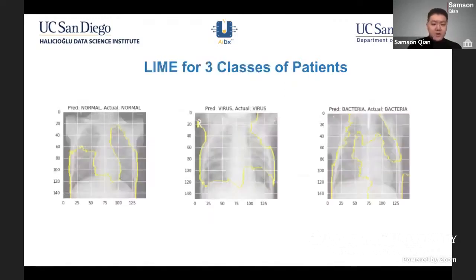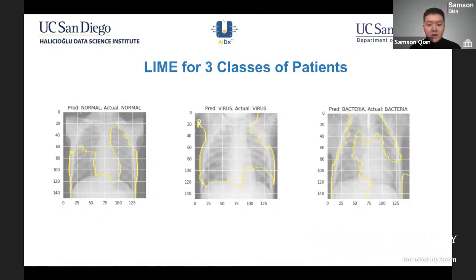Here are more examples of LIME for the three different classes. What LIME does is it doesn't specifically go into each layer of the model to examine the weights; instead, it takes sub-regions chosen on the image and runs them through the model to determine which sub-regions are most important to the model's prediction, then highlights those specific regions.